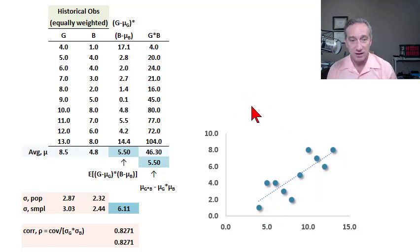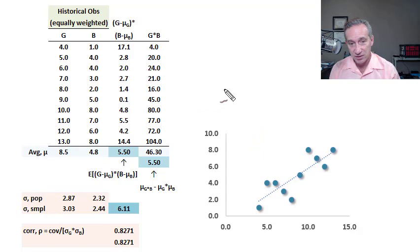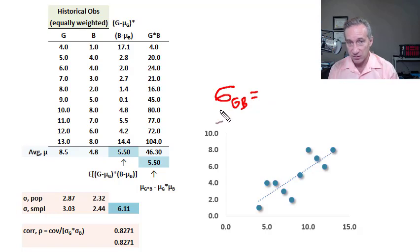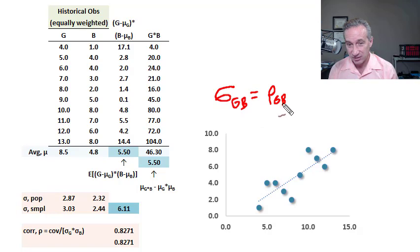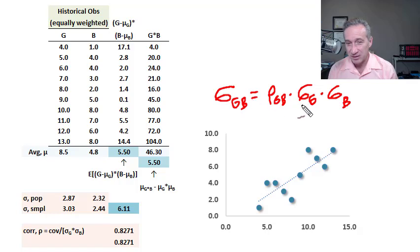Covariance is a measure of linear relationship or linear co-movement between two variables, and we would denote it symbolically with sigma. In the case of covariance between G and B, our subscript would be G, B. An important relationship is that the covariance between G and B is equal to the product of the correlation between G and B — that's almost always a Greek rho, subscript G and B — multiplied by the standard deviation of G, multiplied by the standard deviation of B. So sigma with G as a subscript indicates standard deviation or volatility of G, but sigma subscript G,B indicates the covariance between G and B.